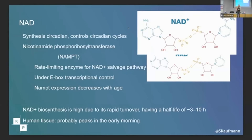NAD does innumerable things around the body. In my world, it does four things: it's for the electron transport chain, helps with DNA repair mechanisms, it's a sirtuin cofactor, and it communicates energy levels between your nucleus and your mitochondria. In this aspect, it helps as a cofactor of your sirtuins. But this is so elegant — NAD is created in an oscillatory fashion.